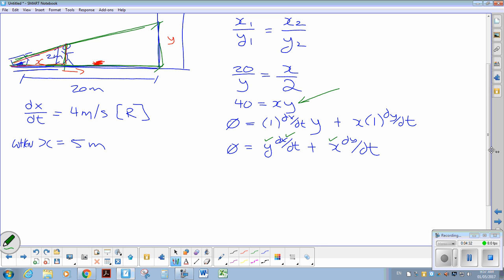This is the expression governing the situation. So, 40 equals xy. If he is 5 meters away from the light, what will the resulting height of the shadow be? We see that the height of the shadow at that point is 8 meters.